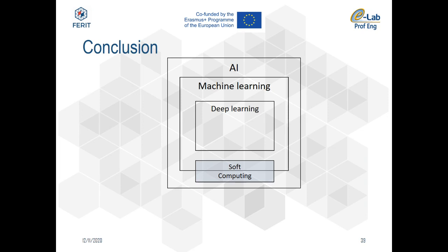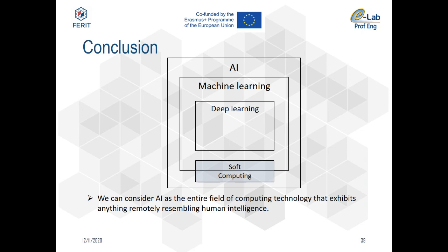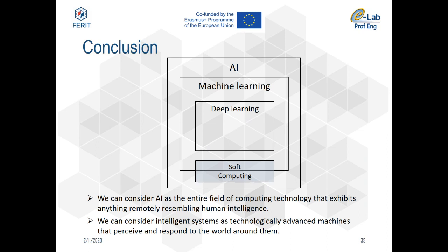In conclusion, AI can be considered the entire field of computing technology that exhibits anything remotely resembling human intelligence. Within AI we have machine learning and deep learning, with soft computing sitting between machine learning and AI. Intelligent systems emphasize machines which have some sort of AI capabilities implemented. This has been the introduction I normally give for the subject of intelligent systems. Thank you for listening and I'm open for questions.